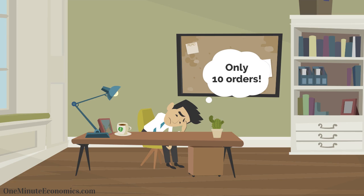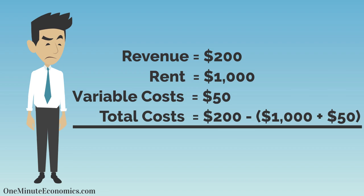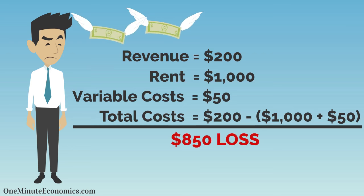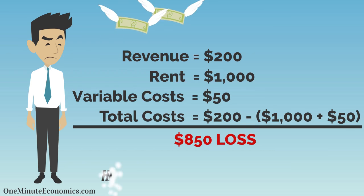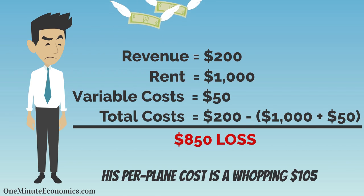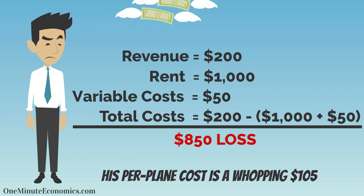His first month is awful, with only 10 orders. He generates $200 but has to pay $1,050 to make those planes — $1,000 to cover his rent and $50 in variable costs. As such, he loses money because his per-plane cost is a whopping $105.